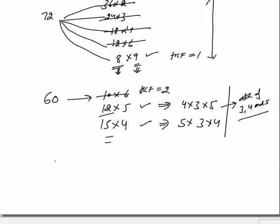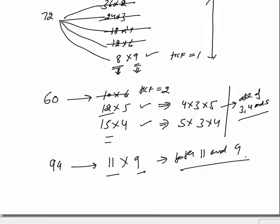What about 99? Straight away, remember 11×9. They are co-prime. So for 99, the number should be divisible by both 11 and 9. The same way for 88: the number should be 11×8, divisible by both 11 and 8. Then only the number is divisible by 88. That is the basic concept for checking divisibility of large composite numbers.